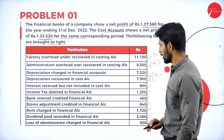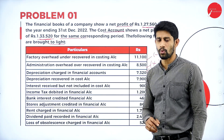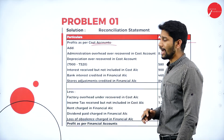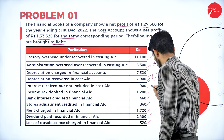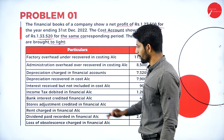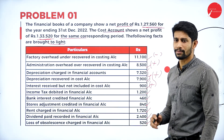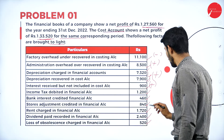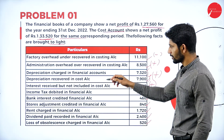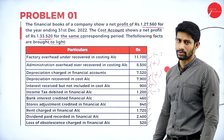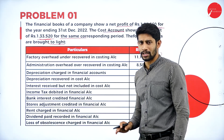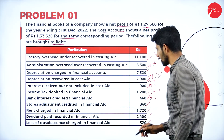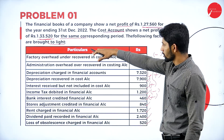Interest received but not included in cost account — we are supposed to add the interest amount of Rs. 900. Next, income tax debited in financial accounts means expenses are debited in the financial account but not in cost account, so we are supposed to deduct the income tax of Rs. 1,200. Bank interest credited in financial account — since it is an income credited in the financial account, we are supposed to add this amount.